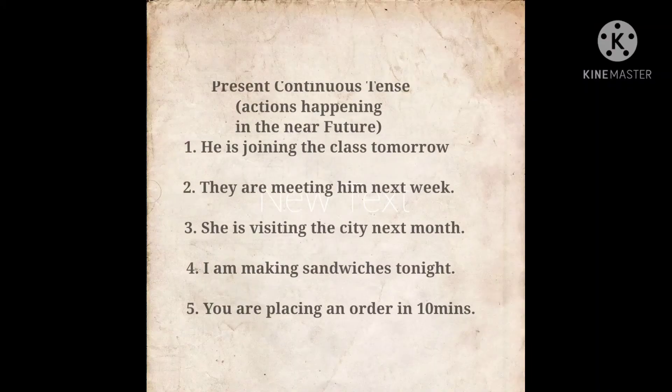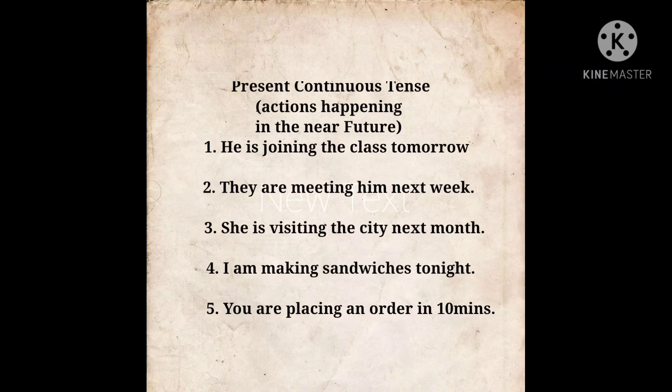Now let's see a few more examples of actions happening in the near future using present continuous tense. He is joining the class tomorrow. They are meeting him next week. She is visiting the city next month. I'm making sandwiches tonight. You are placing an order in 10 minutes.